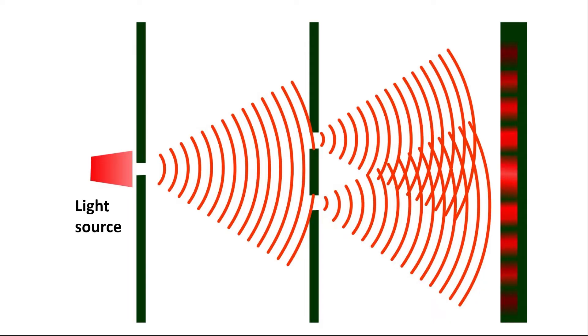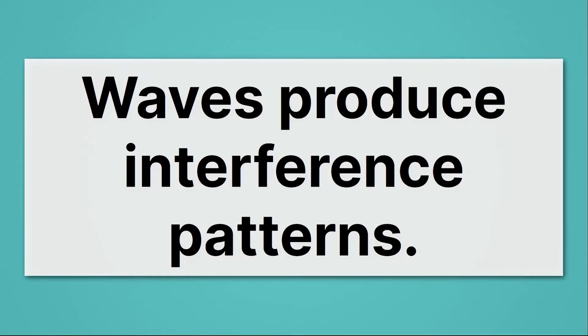And that gives us this characteristic interference pattern. Notice it goes green, red, green, red, all the way down. The red spots are bright spots, where there's lots of light. And the green spots are dark spots, where there's no light at all. So this interference pattern tells us that there's constructive and destructive interference going on. So waves produce interference patterns.